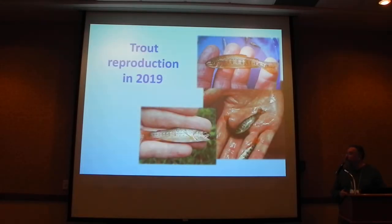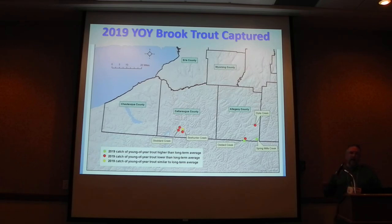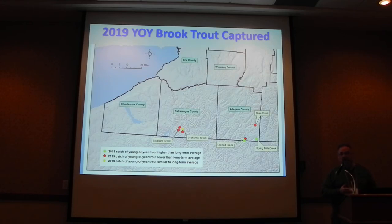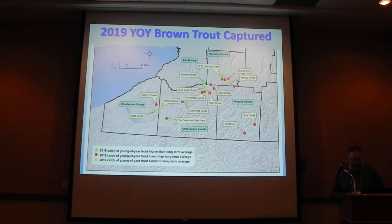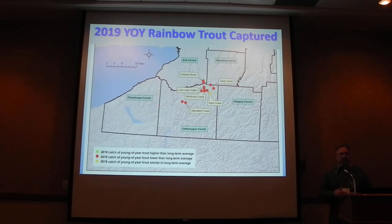Switching gears to what we were seeing for reproduction in 2019 for all three trout species — green dots are where young-of-the-year numbers captured were above the long-term average, red dots are where below. With brook trout, overall it was not a particularly good year in 2019, although a couple sites were above average. For brown trout, about half the sites were above average and about half below — good in some places, not others. For young-of-the-year rainbow trout, 11 of our 12 sites were below average — pretty poor reproduction.